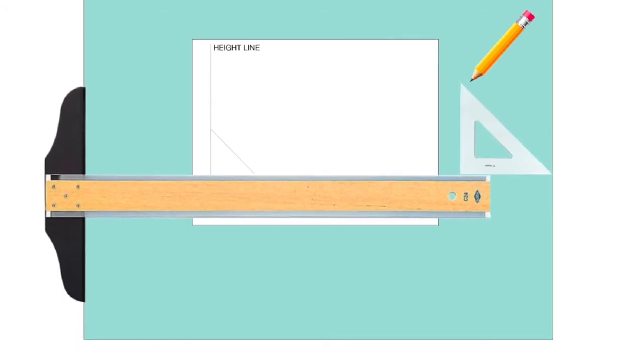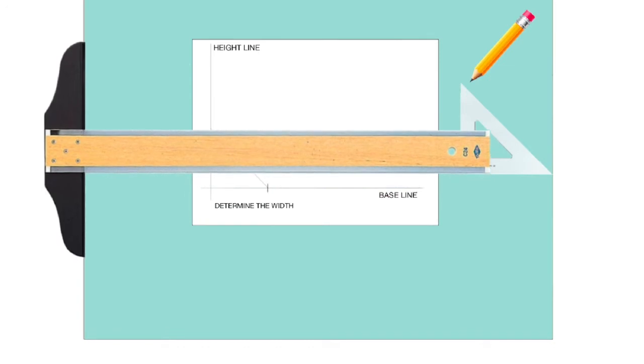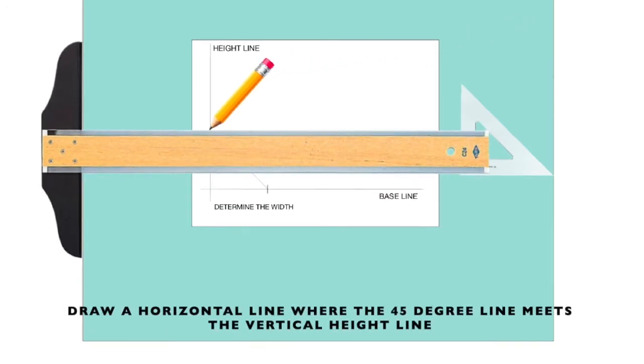Line up the T-square to where that diagonal line crosses over the height line, and draw a horizontal line.